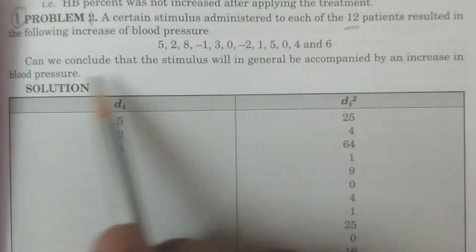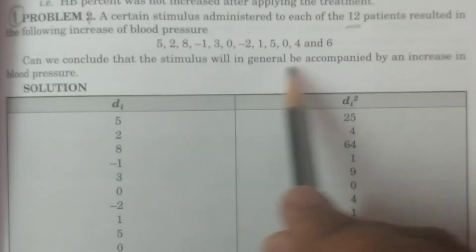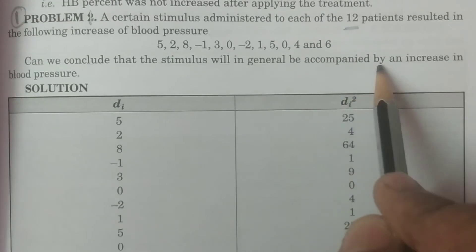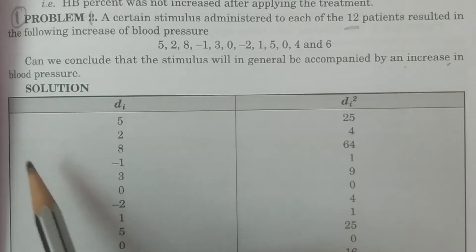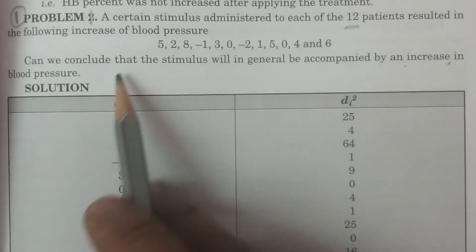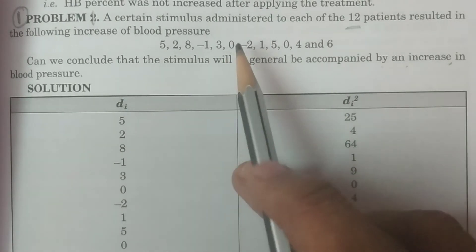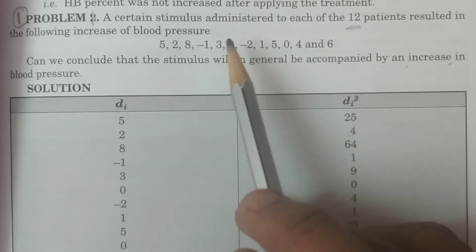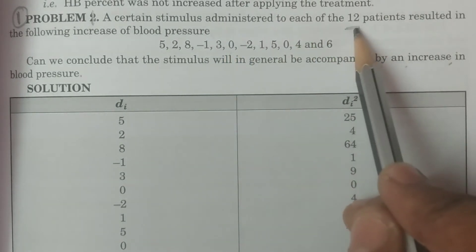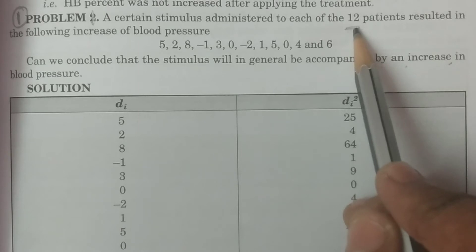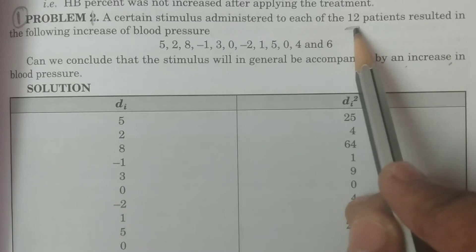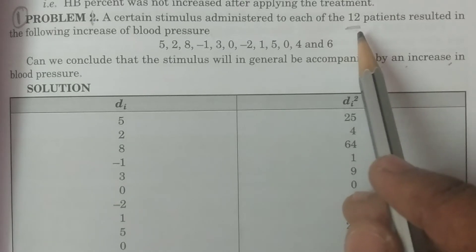Can we conclude that the stimulus will in general be accompanied by an increase in blood pressure? This involves a certain treatment applied to 12 patients. N is equal to 12, and we can split this into two parts: N1 is equal to 12 and N2 is equal to 12.